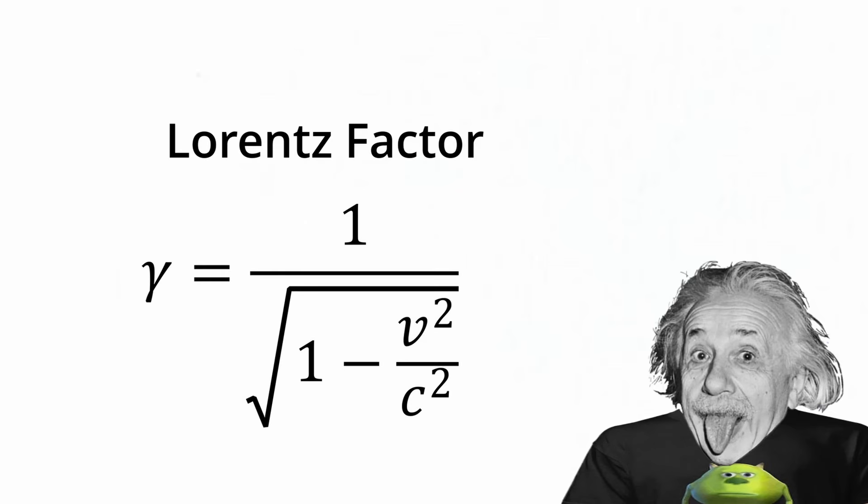In Einstein's theory of relativity, he also derives what's known as the Lorentz factor. The Lorentz factor is used to calculate the time dilation for an object traveling at high speeds relative to an observer. In simpler terms, we can see the relation in how much time passes for an object traveling at high speeds when one second passes for a stationary observer.